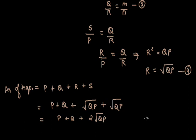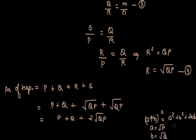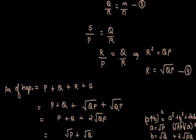Now we know the identity (A + B)² = A² + B² + 2AB. Suppose A = √P and B = √Q. Then this identity expands as (√P)² + (√Q)² + 2√P·√Q = P + Q + 2√(PQ). This is identical to our expression, so we can replace it with (√P + √Q)². Therefore, the area of the trapezium simplifies to (√P + √Q)², and this is our answer.